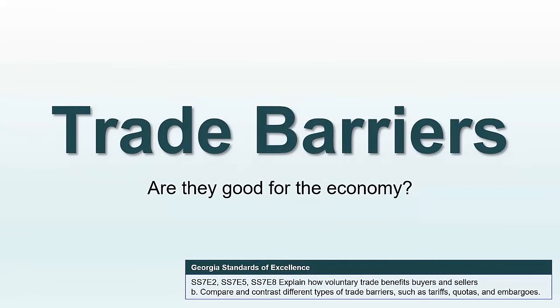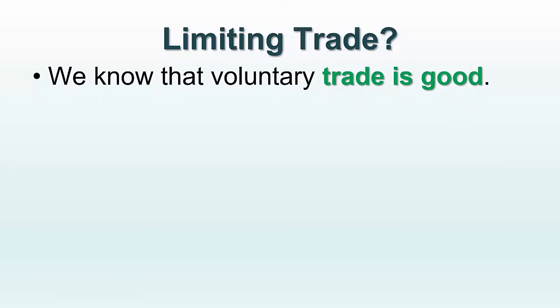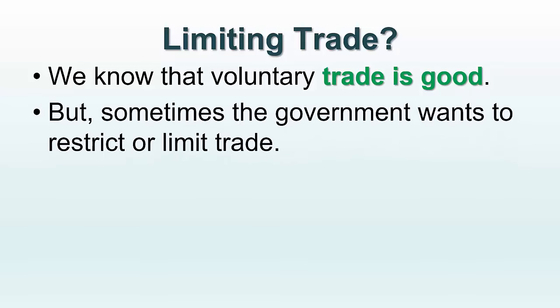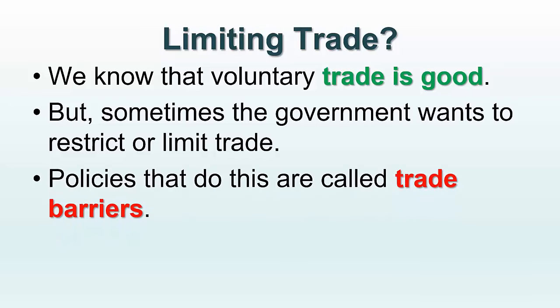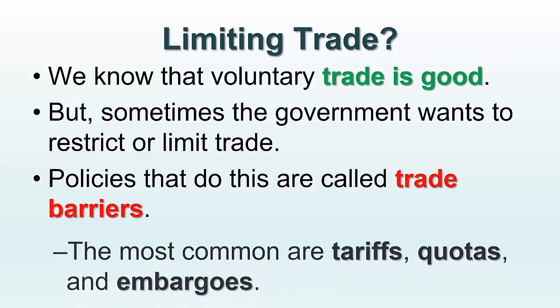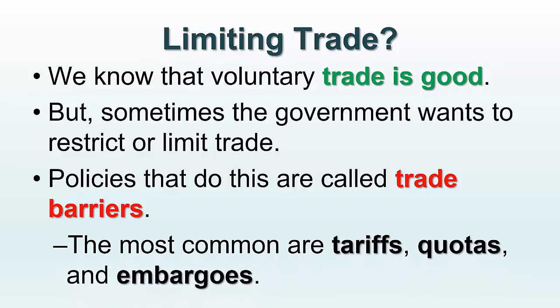Today we're going to learn about trade barriers and try to establish just how effective trade barriers actually are. As we all know, voluntary trade is a good thing. But sometimes the government might want to restrict or limit trade. Policies that do this are called trade barriers, and the most common types are tariffs, quotas, and embargoes.